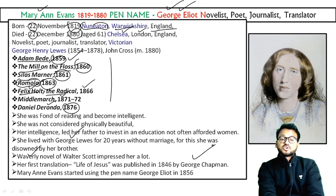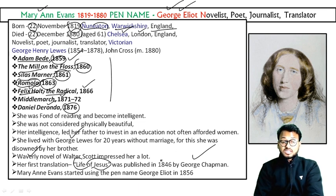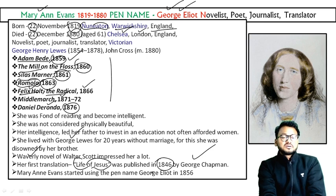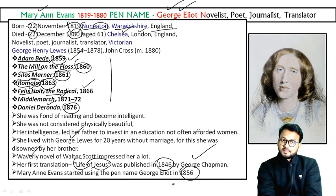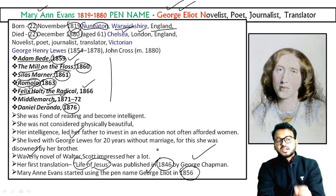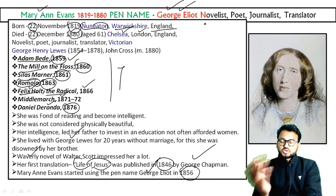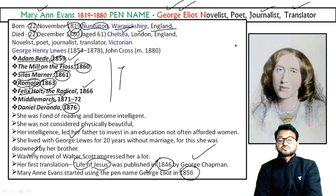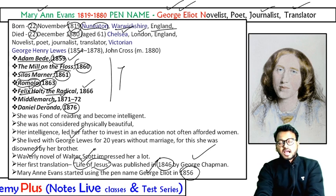She was also interested in translation. She translated a work called Life of Jesus in 1846. At this time she was not yet writing under the name George Eliot — she was still known as Mary Ann Evans. But later, in 1856, she adopted the name George Eliot. This is also her pen name, so on your exam if asked for the pen name of Mary Ann Evans, the answer is George Eliot. As a novelist she wrote seven wonderful novels.